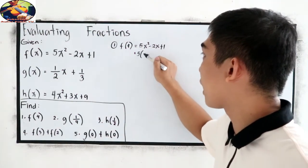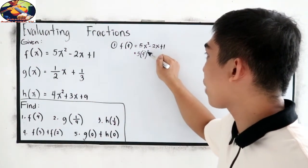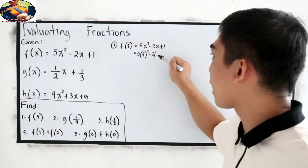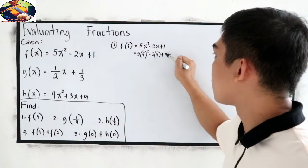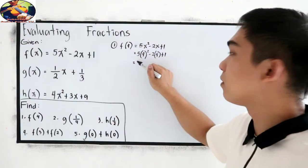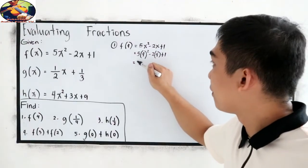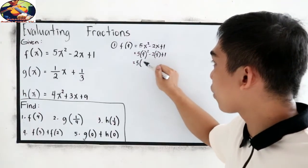In this case, x is 4. So, 5 times 4 squared minus 2 times 4 plus 1. Now, simplify.